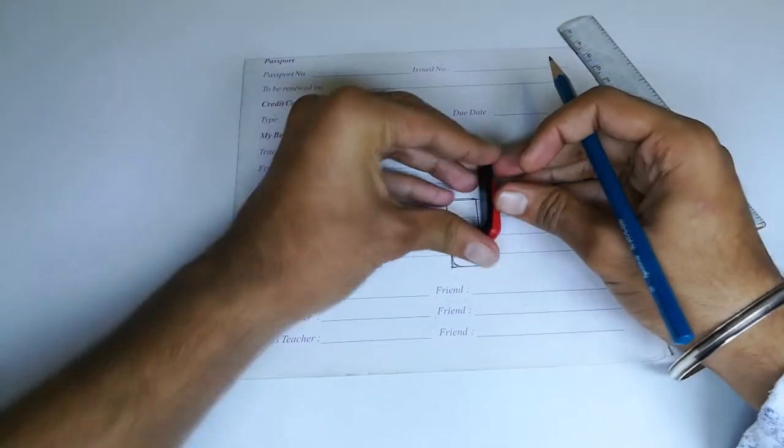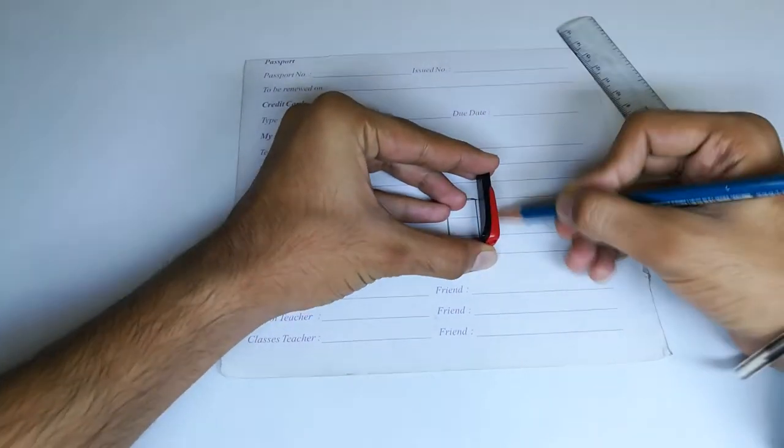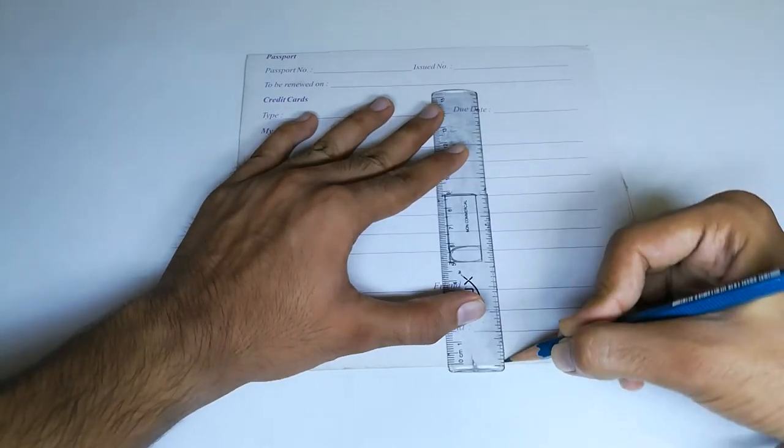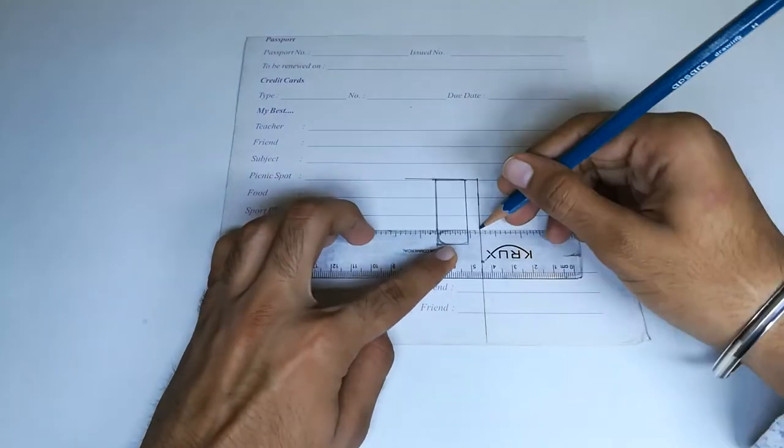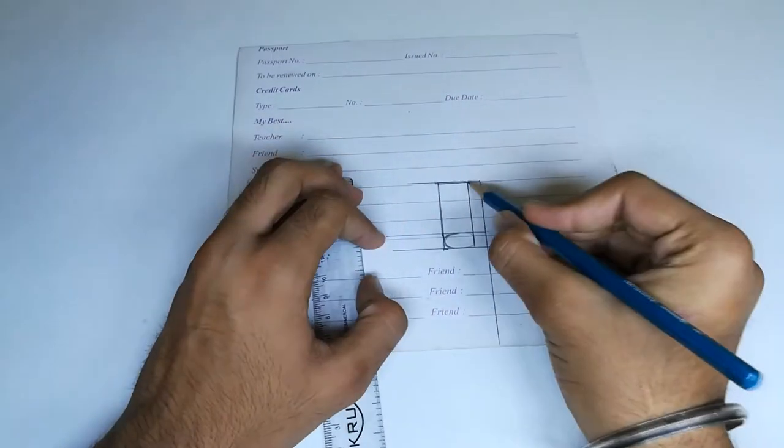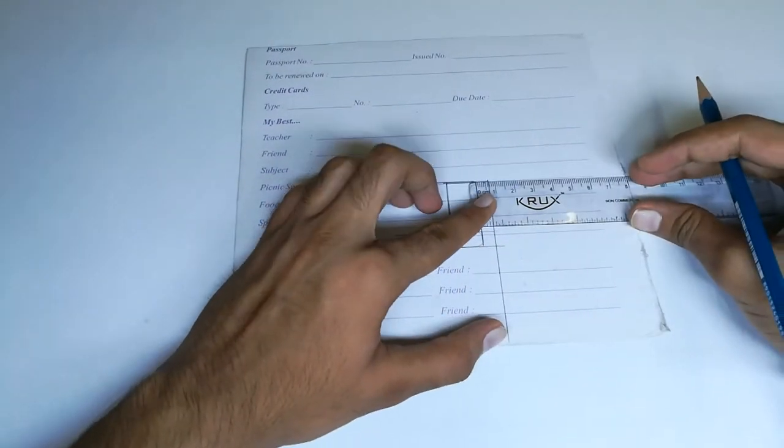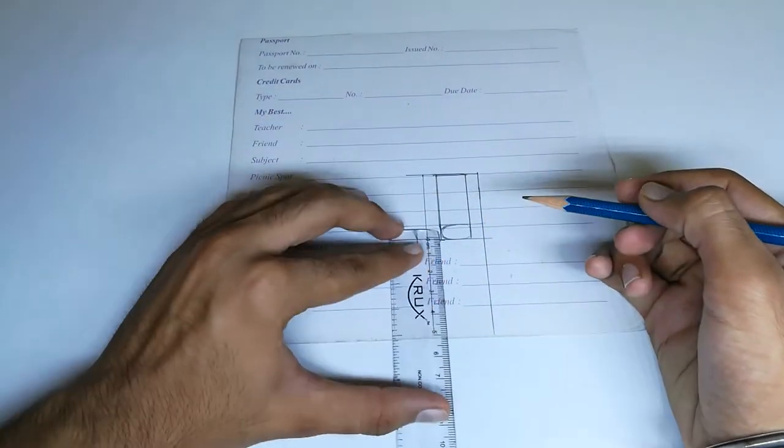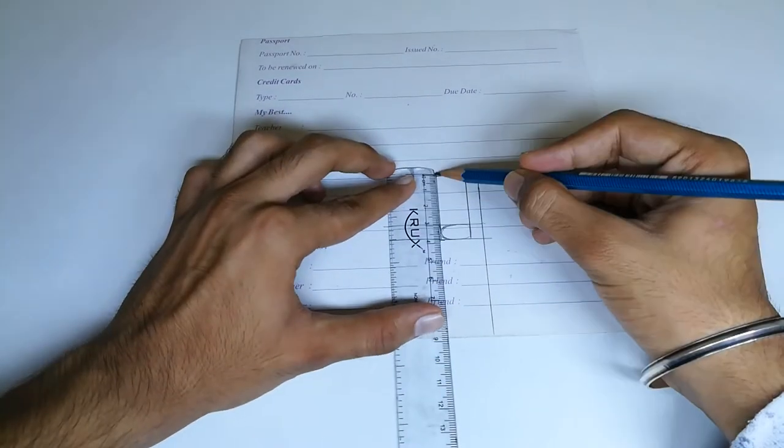Now mark the depth of the pen drive and similarly draw the rectangle. Copy the rightmost rectangle on the other side and copy the three rectangles below the base rectangle.